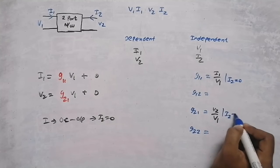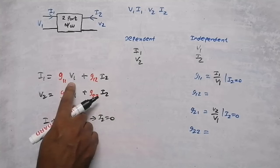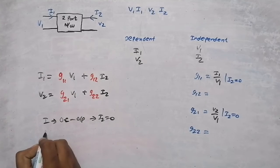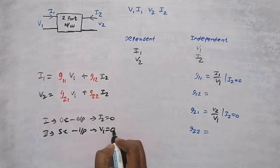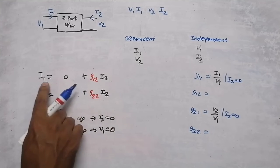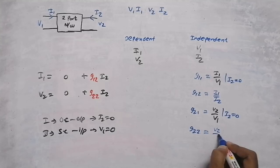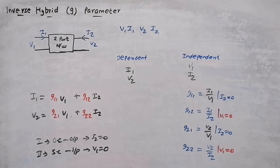For finding g12, v1 should be zero. To get v1 equal to zero, we need to short circuit the input port. When we short circuit the input port, v1 equals zero. Therefore, g12 equals i1 divided by i2, and g22 equals v2 divided by i2, under the condition that v1 equals zero. In the next video, we will do a problem based on hybrid and inverse hybrid parameters.